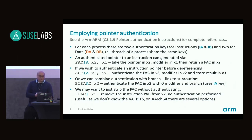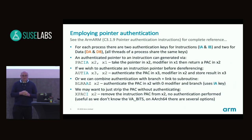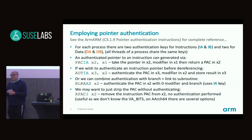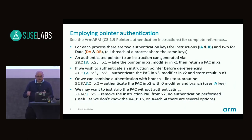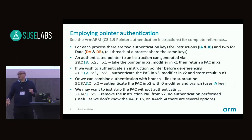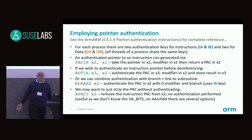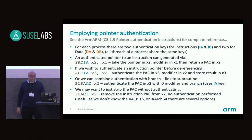If we want to go the other way, we have an authenticate instruction where again we take a pointer with a signature and a modifier, and we get back either a usable pointer - meaning authentication succeeded - or an invalid pointer which will give us a translation fault. We can combine operations as well, and we can also just remove the signature from a pointer with the XPAC instruction if we don't care about authenticating but just want the original pointer back.